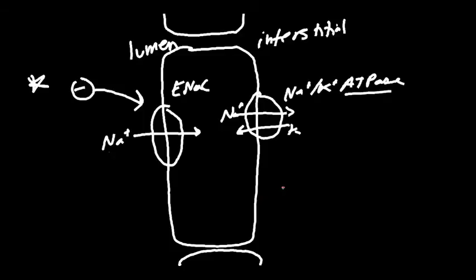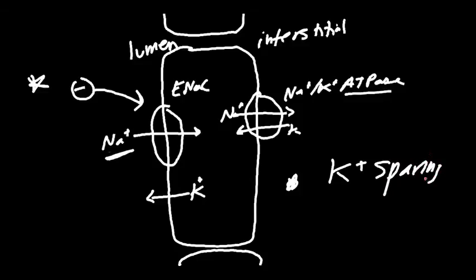We've also got a potassium channel here so potassium can leave. And if we block this sodium channel what will happen is you lose sodium. The amiloride diuretics are known as potassium sparing, they're known as potassium sparing diuretics.